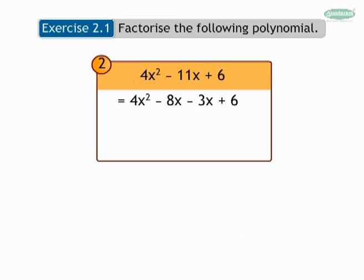Grouping first two and last two terms and taking common, we get 4x into x minus 2, minus 3 into x minus 2.